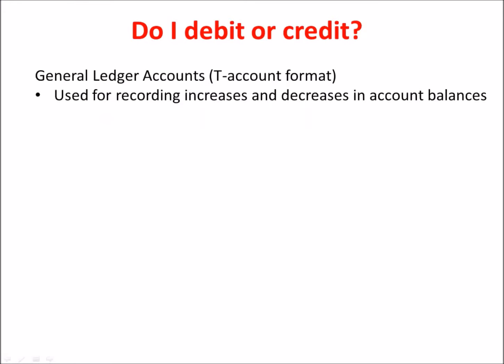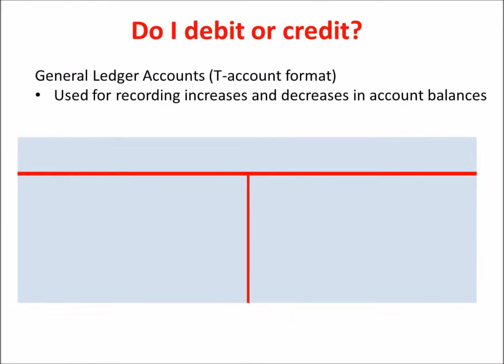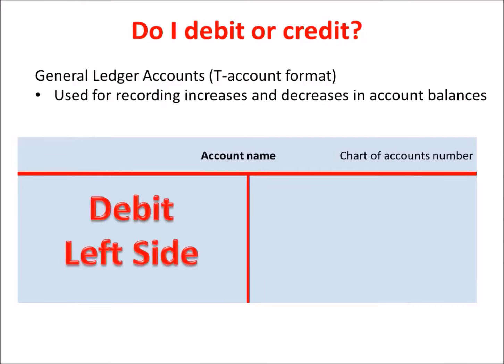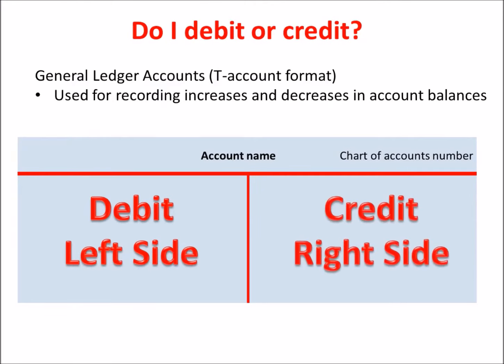We debit or credit general ledger accounts. These are used to record increases and decreases in the account balances, and we use a T-account format to demonstrate this. We have one of these accounts for every account in our chart of accounts. Each is named and has a number. The left side is the debit side and the right side is the credit side.